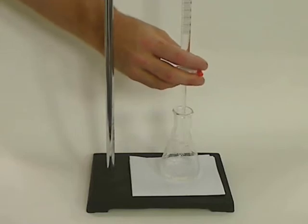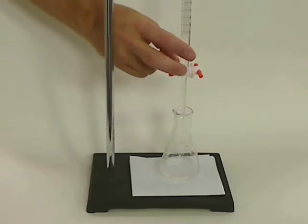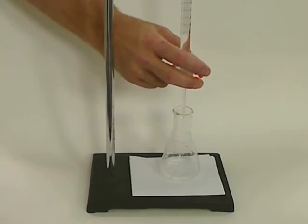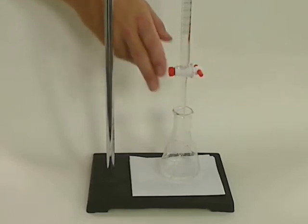The proper technique is to grasp the whole stopcock and turn it like this. This goes back to the old days when we had glass stopcocks and glass barrels that were greased on and very easy to pull out. So we used to do it this way so that we wouldn't pull out the stopcock during the titration.